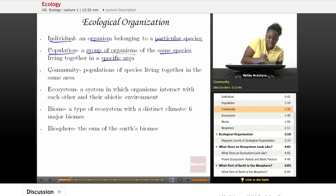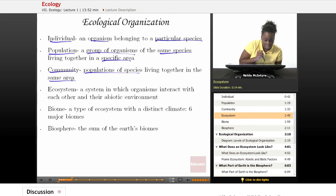And then we have something called community. And community basically includes different populations of species living together in the same area. And then we have what we call the ecosystem. And an ecosystem is a system in which organisms interact with each other and their abiotic environment. And we'll talk more about what that word abiotic means.